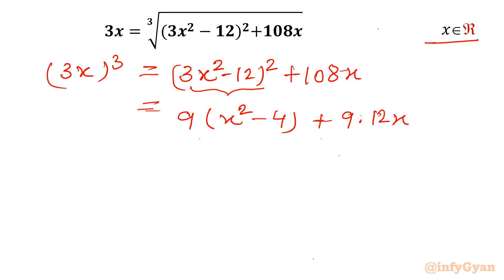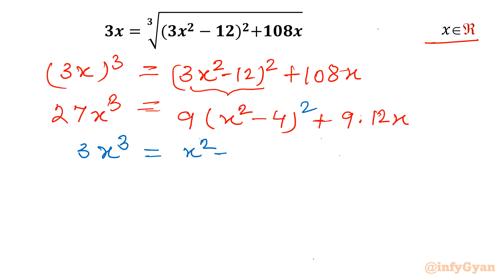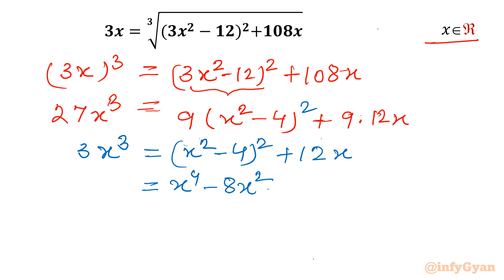The left hand side (3x)³ is 27x³. Now this equation is divisible by 9, so let us divide through by 9. We get 3x³ on the left hand side. The right hand side has (x² − 4)² plus 12x. Now expand (x² − 4)² using the (a − b)² formula: a² − 2ab + b², giving x⁴ − 8x² + 16, then plus 12x and 3x³.